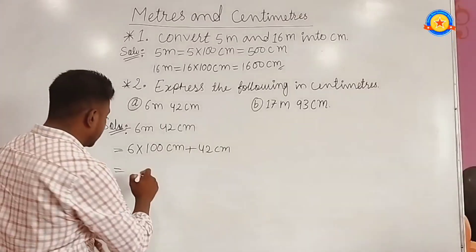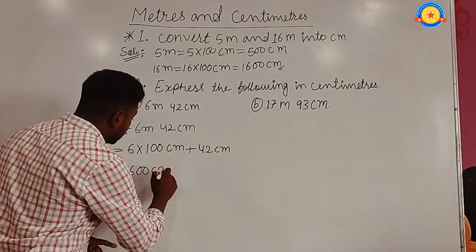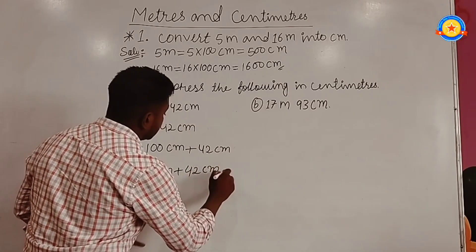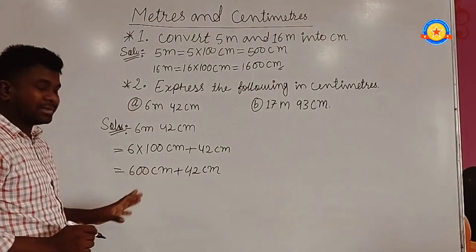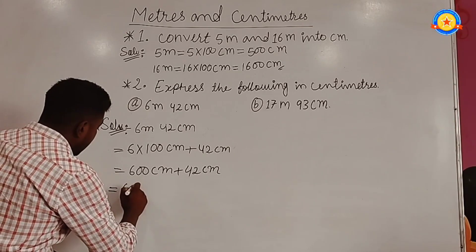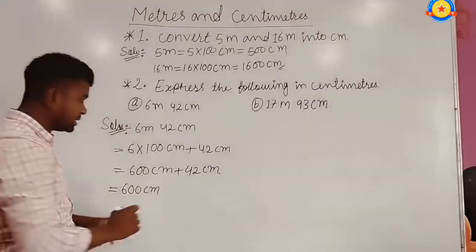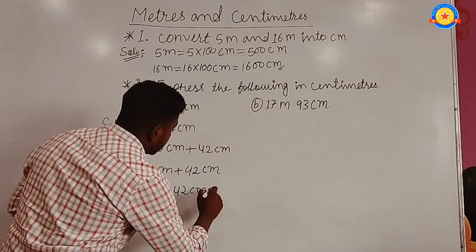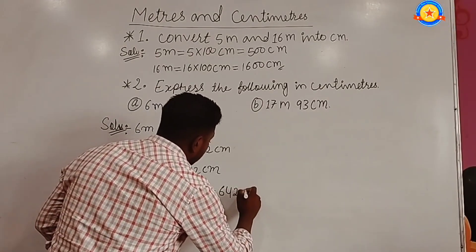6 into 100 gives us 600 centimeters, plus we have 42 centimeters. So 600 centimeters plus 42 centimeters equals 642 centimeters.